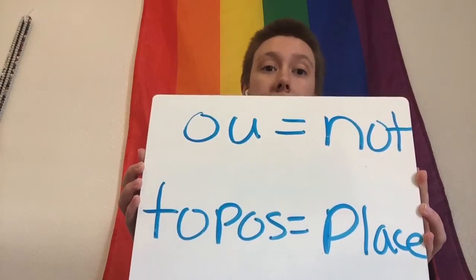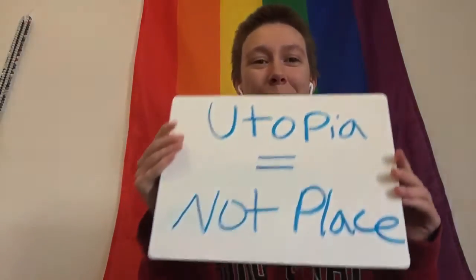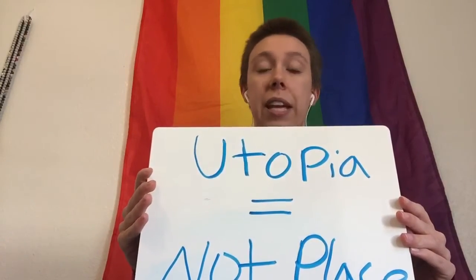Hi everyone. Now that we've been reading 1984 for a couple of weeks and we see what the world is like, I think it's important to go through a few terms. One is utopia. Utopia comes from the Greek words 'ou,' meaning not, and 'topos,' meaning place — so utopia translates to 'not a place,' a place that doesn't exist. It's a place where there isn't war, there isn't hunger, there's no disease, everyone's equal.